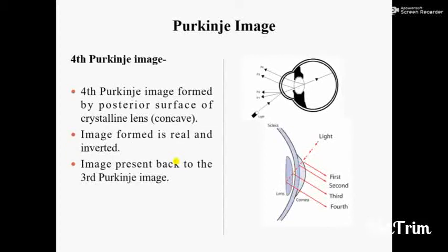The 4th Purkinje Image is formed by the posterior surface of the crystalline lens. This surface is concave. Because of the concave shape, the image formed is real and inverted. The 4th Purkinje image is positioned just opposite to and behind the 3rd Purkinje image.